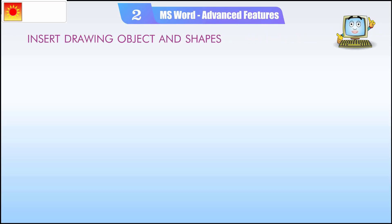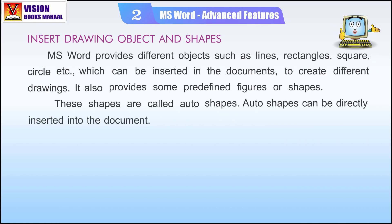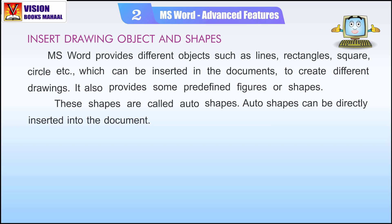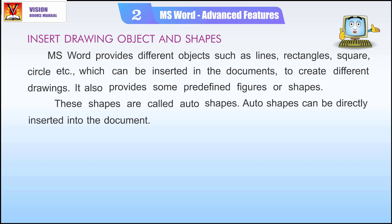Insert Drawing Object and Shapes. MS Word provides different objects such as lines, rectangles, square, circle, etc., which can be inserted in the documents to create different drawings. It also provides some predefined figures or shapes. These shapes are called auto shapes. Auto shapes can be directly inserted into the document.